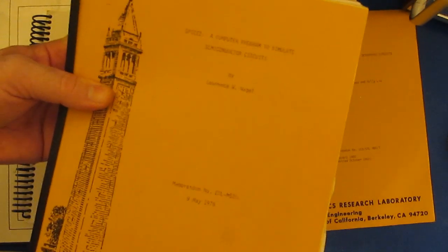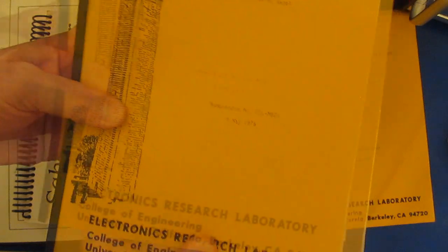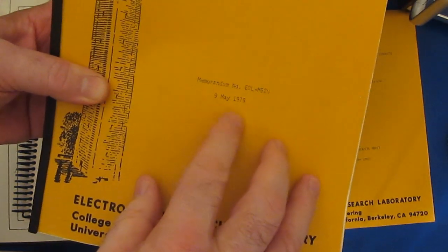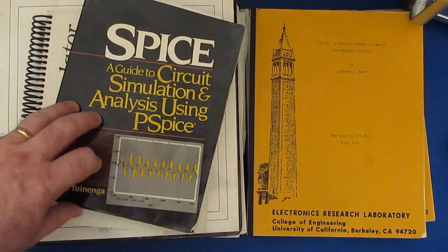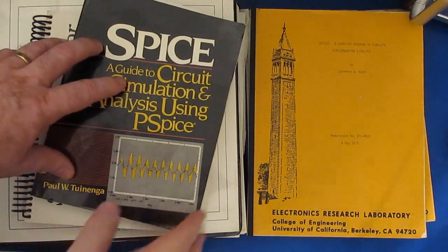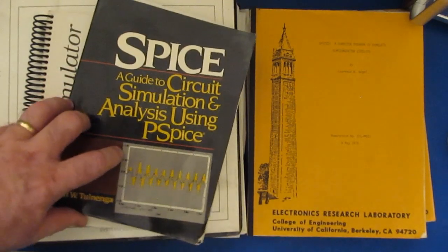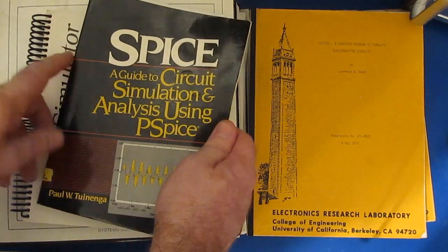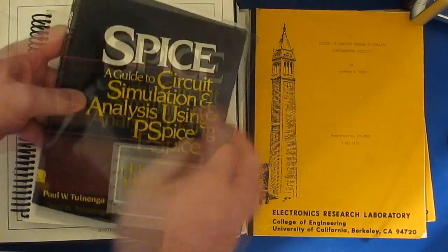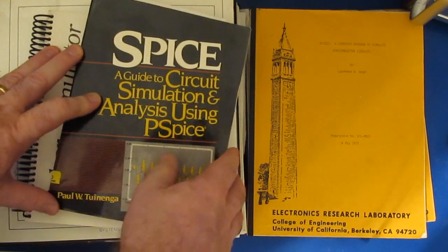And then I have this one, SPICE 2, a computer program to simulate semiconductor circuits. This one is dated May 9th of 1975. At one point the company I worked for bought a copy of PSPICE. I'm talking about the very original one. It ran on DOS. At that time I think we had some IBM AT286 PCs.